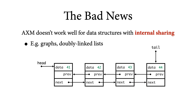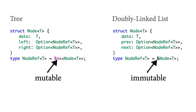The bad news is that the AXM discipline does not work well for implementing data structures that do have internal sharing — where a node may have multiple other nodes pointing to it — which is the case in general in graphs, as well as in doubly linked lists like the one shown here. Each of the nodes has two references to it, one from the previous and one from the next node. As a result, the only way to implement this in Rust, naively at least, would be to represent the links between nodes with shared references, since those are the kind that permit multiple references to the same node.